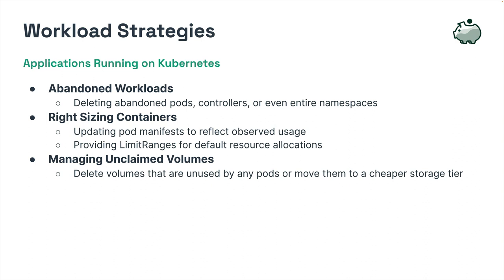Workloads are the applications running on your Kubernetes cluster—they may be pods, deployments, replica sets, stateful sets, daemon sets, jobs, or cron jobs. Optimizations at this level relate to the requested resources made by workloads to Kubernetes itself and whether they're still in use. When specifying pods, containers may be assigned requests and limits for resources such as CPU and memory. If these are not assigned or are over-provisioned, containers may be allocating more resources than they actually need, costing you money. Under-provisioned containers may cause CPU throttling or out-of-memory errors, leading to poor performance.